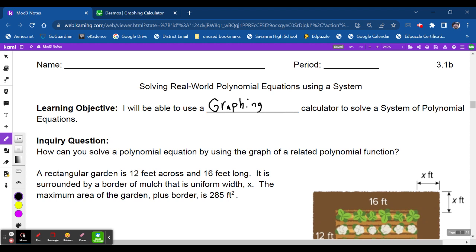So we are going to create two functions and figure out where do they meet. We have this rectangular garden that's 12 feet across by 16 feet long. It is surrounded by a border that has a uniform width of x. So the maximum area of the garden plus the border can only be 285 square feet.